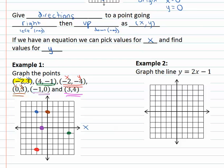Example two asks us to actually graph the equation y equals 2x minus 1. This is where we're going to pick values for x and find what goes with the y's. So we'll pick a value for x and we'll find what y is if it equals 2x minus 1.